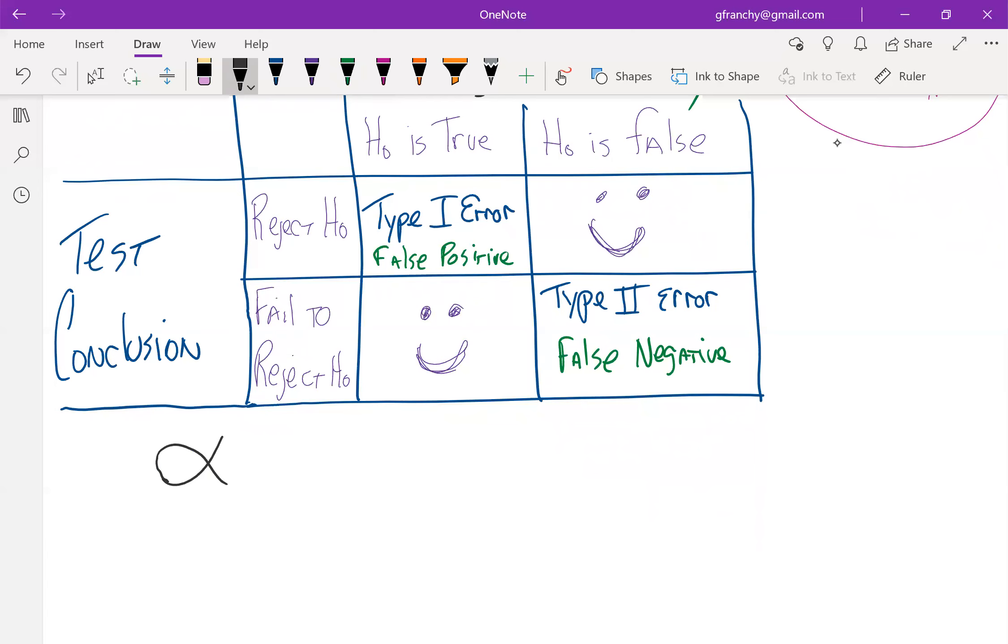when we choose our alpha, or in the book it's chosen for us, this actually represents the probability of making a Type I error. We get to choose the risk that we take for making a Type I error.